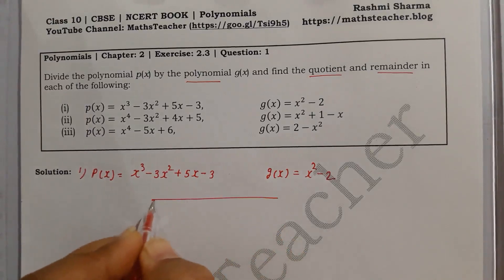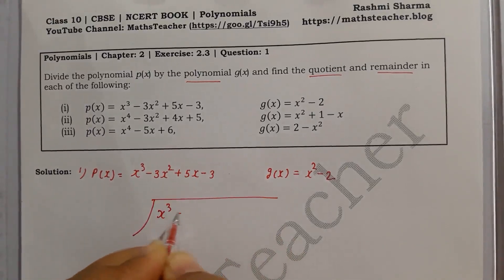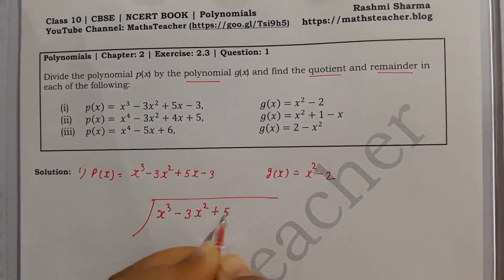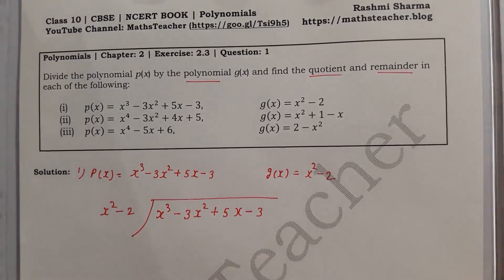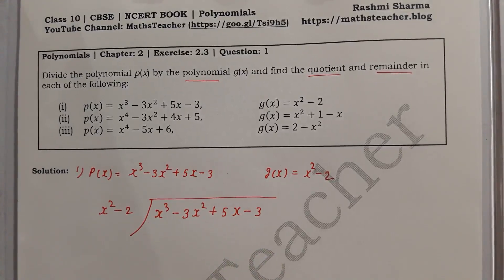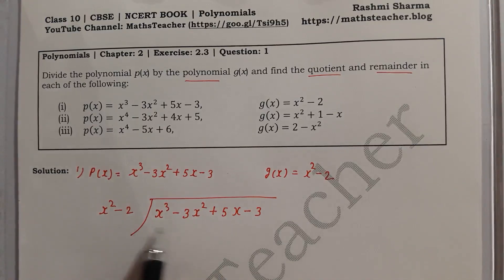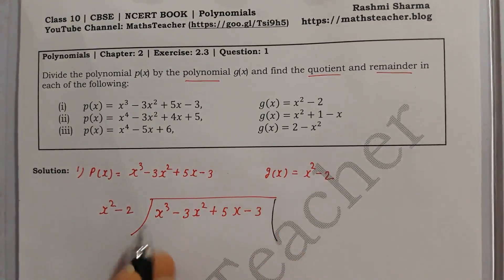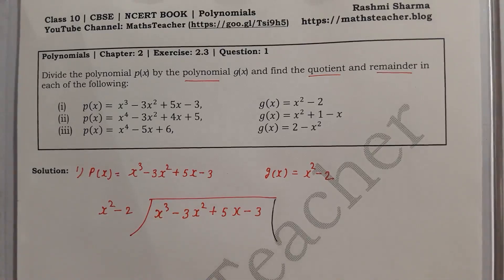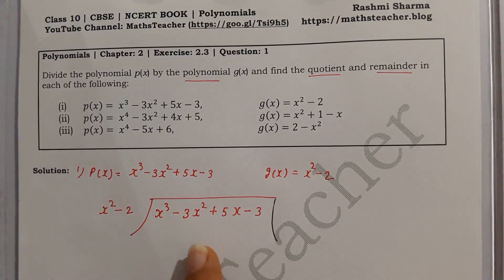Let's write it out: the dividend is x³ minus 3x² plus 5x minus 3, and the divisor is x² minus 2. If you don't understand the setup, first look at the introduction part. We need to arrange both the divisor and dividend in decreasing order of degree: degree 3, 2, 1, 0.